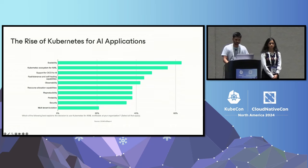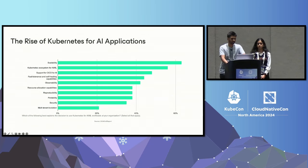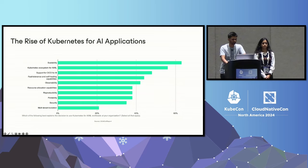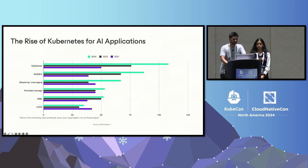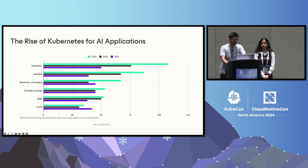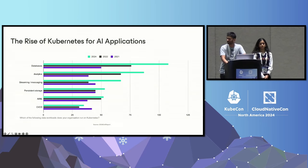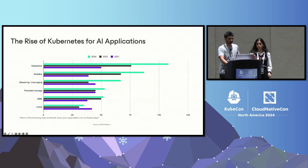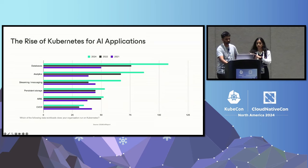We can see this in recent reports as well. Yesterday, the Data on Kubernetes community released a report with 150-plus practitioners surveyed, and the reasons we just talked about were mentioned as the top reasons why people are choosing Kubernetes to deploy AI workloads. AI/ML has seen a rise in the last two to three years — over 50% said they deploy their AI apps on Kubernetes. The vast majority of responders also said they deploy databases on Kubernetes, which is very important for AI and ML workloads.